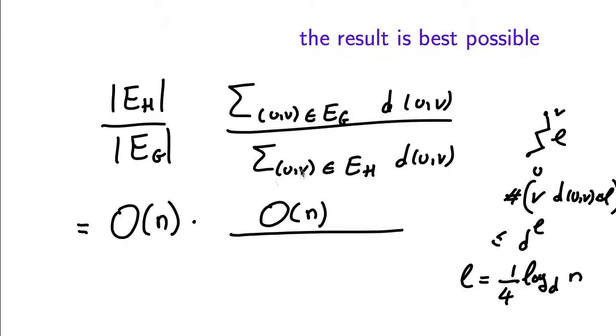So this means that when I look at this summation, all but a tiny fraction of the pairs U, V are at distance at least some constant times log n. So this summation will be at least some constant times n squared log n. So the whole thing is at most order 1 over log n as claimed.